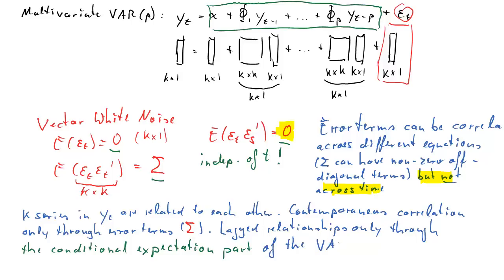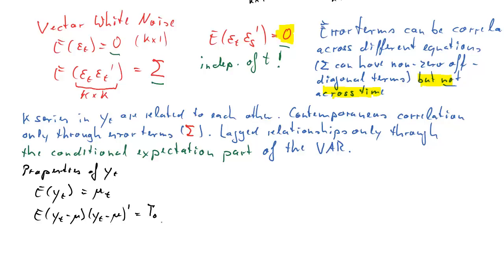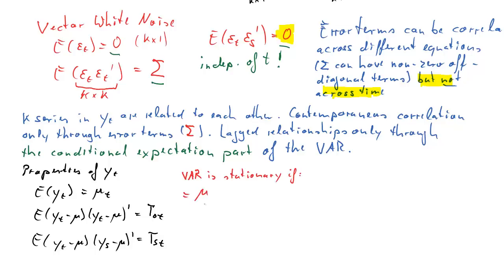We discussed the properties of the vector white noise. Now we're going to discuss the properties of yt. The expected value of yt we label mu_t. Then the expected value of yt mean-corrected — yt minus mu times yt minus mu prime — we call gamma naught t. And the expected value of the same term but at times t and s we call gamma_st, which is the autocovariance. Now if the VAR(P) process is stationary, the t subscripts disappear and we have first and second moments constant over time — our definition of covariance stationarity.